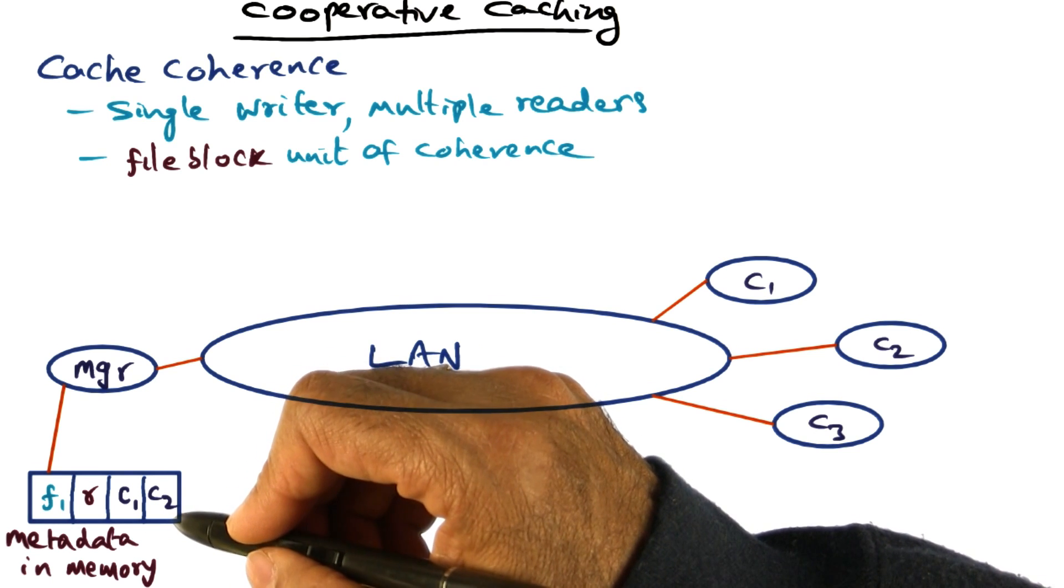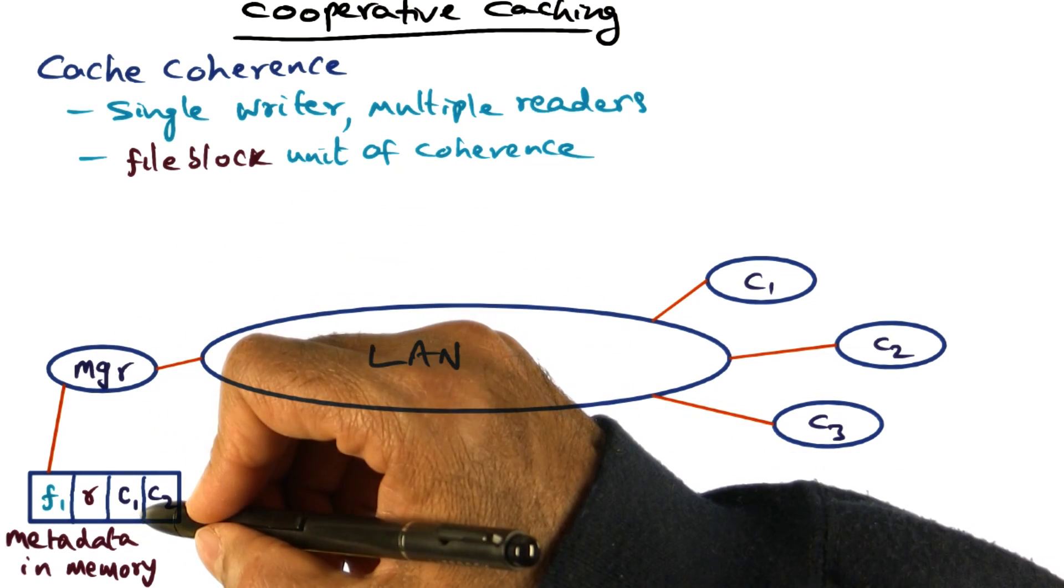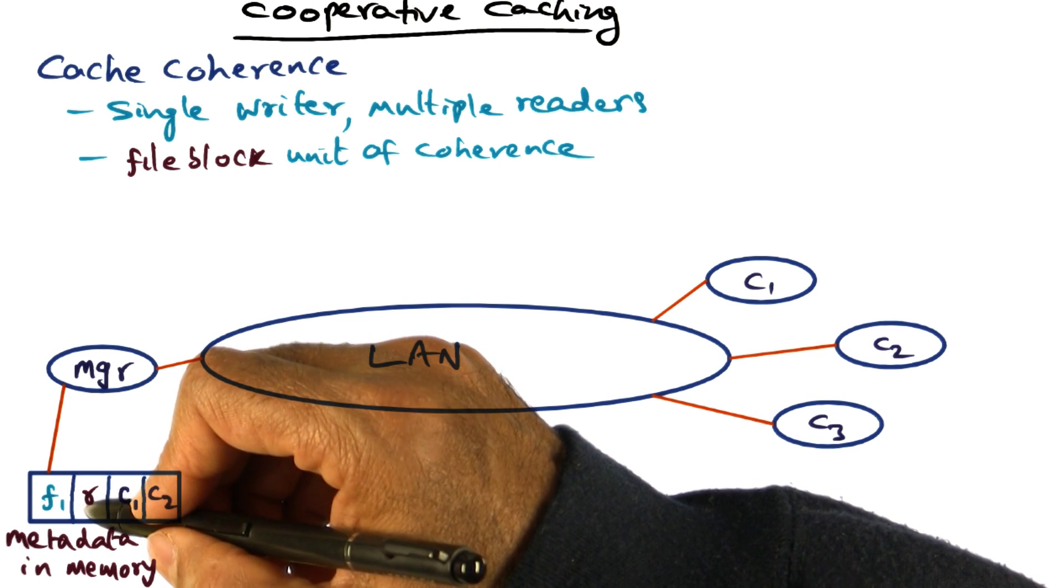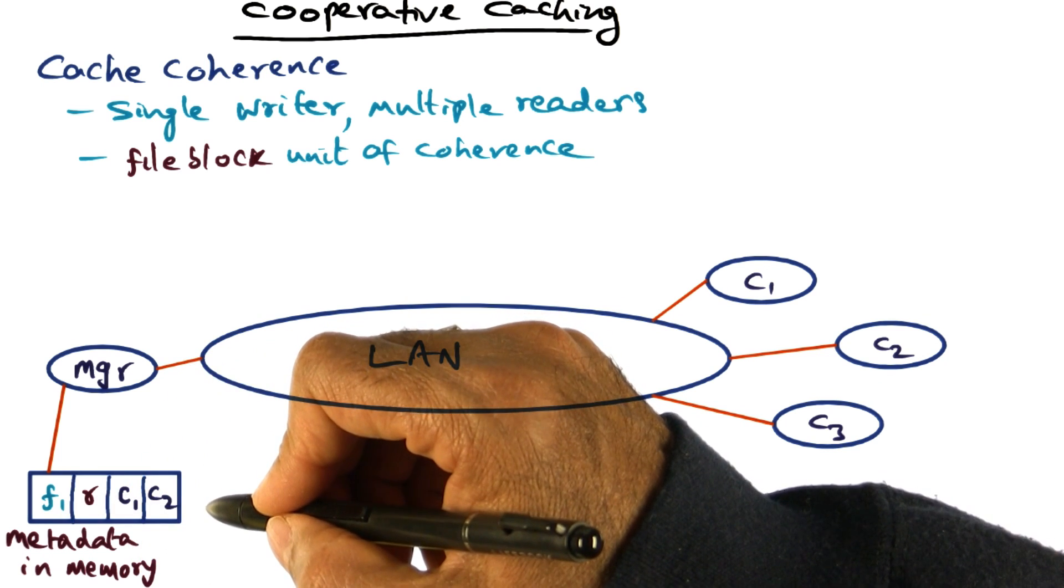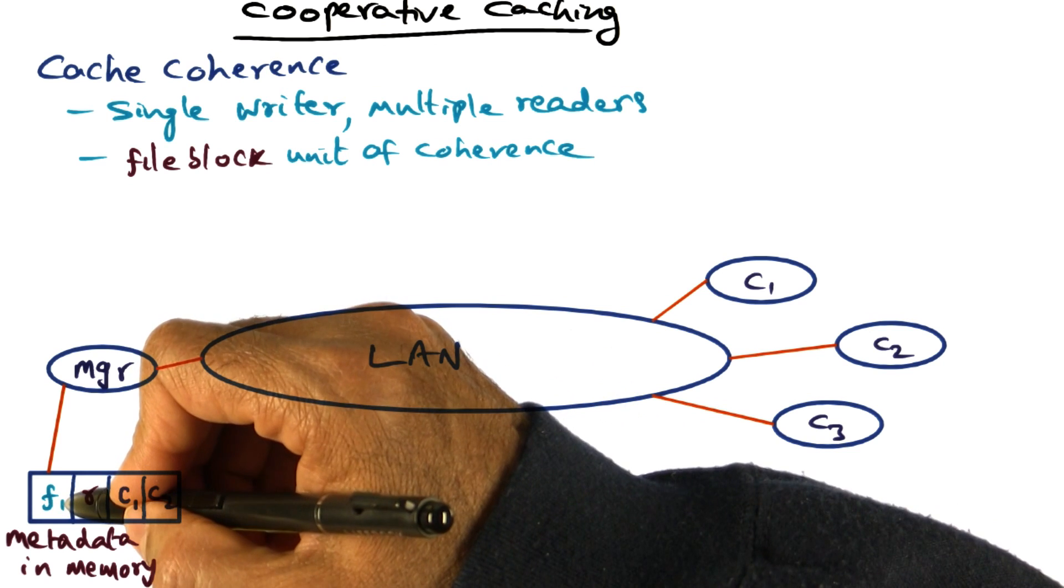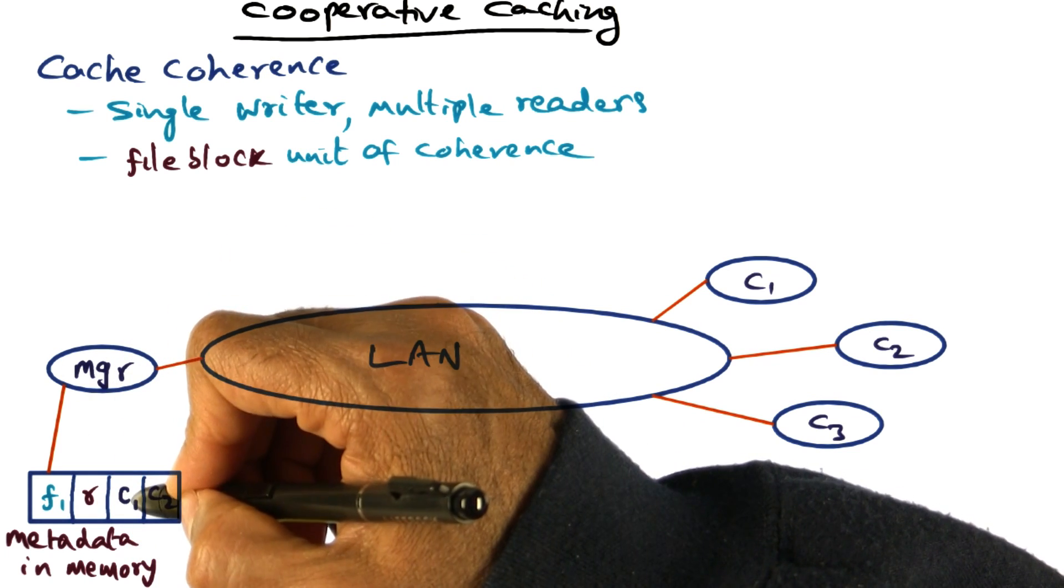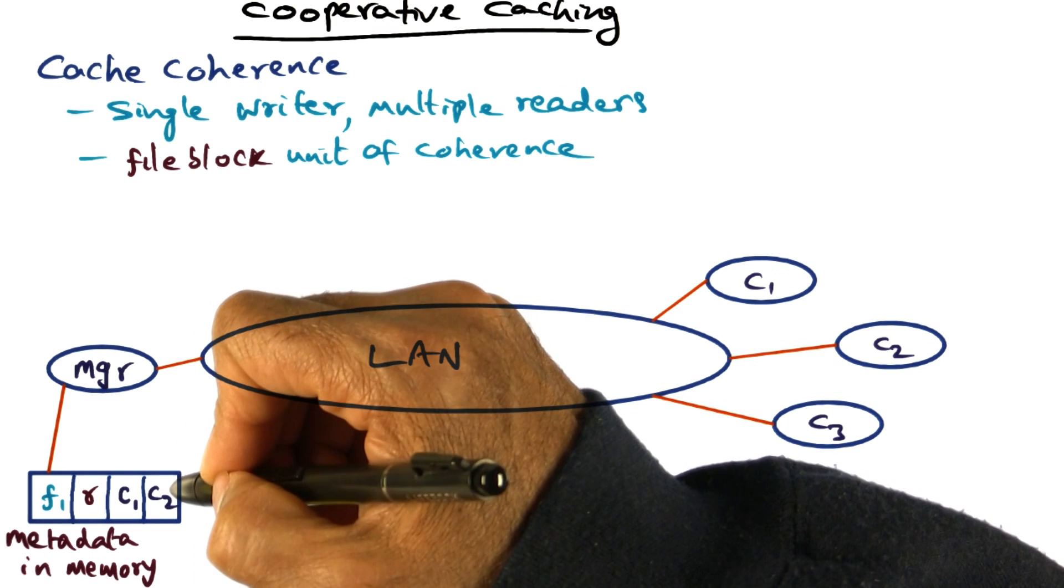Then the metadata in the memory of this manager will have information about the current state of that file. For instance, this particular entry says that a file F1 managed by this manager is being read concurrently by two different clients, C1 and C2.